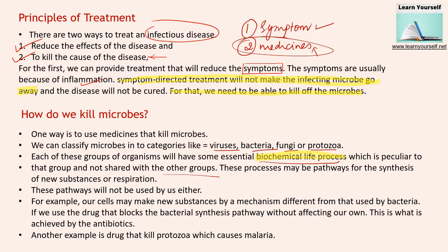Once we target this biochemical life process, the microbes will no longer be able to multiply or survive in our body — in turn, we are killing them and reducing their count. These pathways are not used by us, so medicine will not be common between groups; it will work for one particular group. For example, our cells may make new substances by a mechanism different from bacteria. If we use a drug that blocks the bacterial synthesis pathway without affecting our own, this is what is achieved by antibiotics.